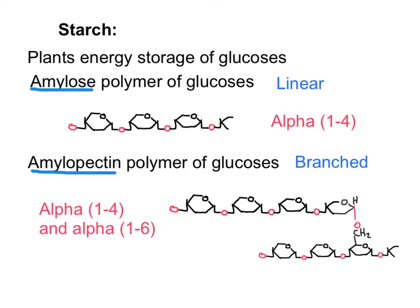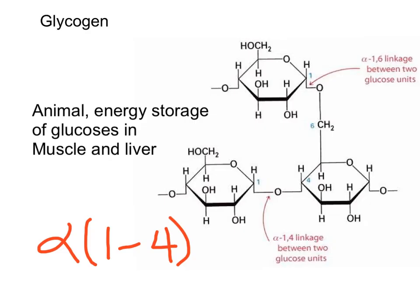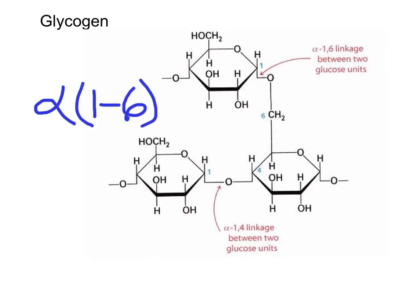Animals also can store glucose units in a polysaccharide. Glycogen is the storage of glucose in skeletal muscles and in the liver. It is also a branched polysaccharide using alpha-1,4 and alpha-1,6 glycosidic bonds. Therefore, it has a similar structure to amylopectin because it has alpha-1,4 glycosidic bonds and branches off on alpha-1,6 glycosidic bonds.